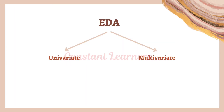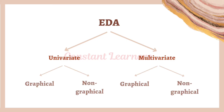Exploratory data analysis is classified into two categories: univariate EDA and multivariate EDA. Univariate deals with a single variable, while multivariate deals with two or more variables and displays the relationship between them. These can be further classified as graphical univariate, non-graphical univariate, graphical multivariate, and non-graphical multivariate.